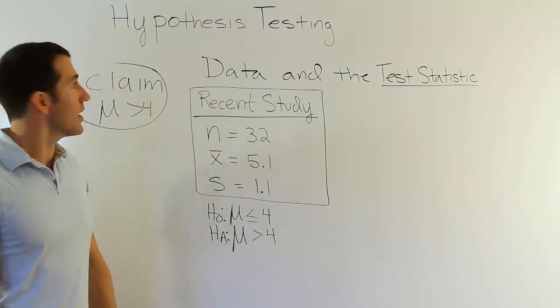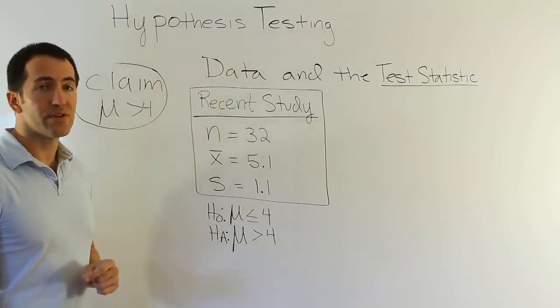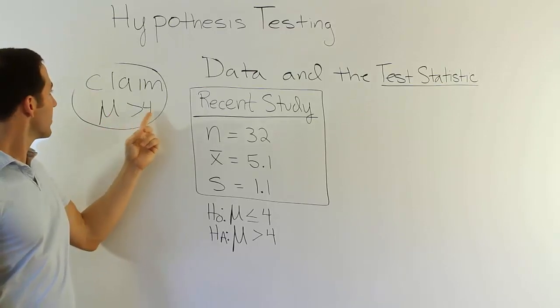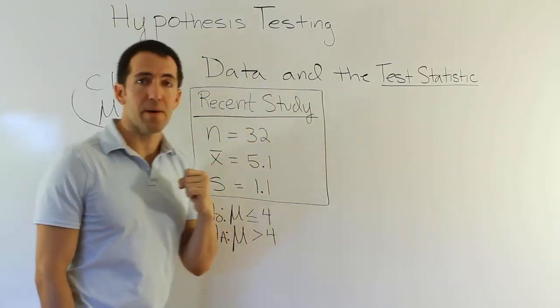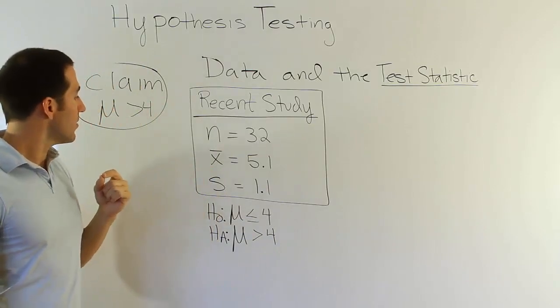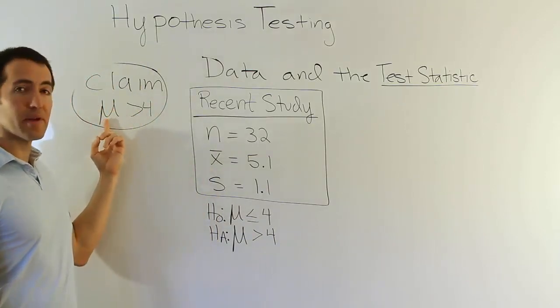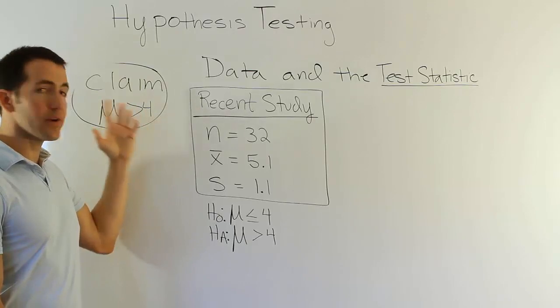Okay, so we're running a hypothesis testing procedure on this claim, the mean is greater than 4. In this video, we're looking at the data and the test statistics steps. Remember that this was the mean time to complete a bachelor's degree. We said it was greater than 4 years in the claim.